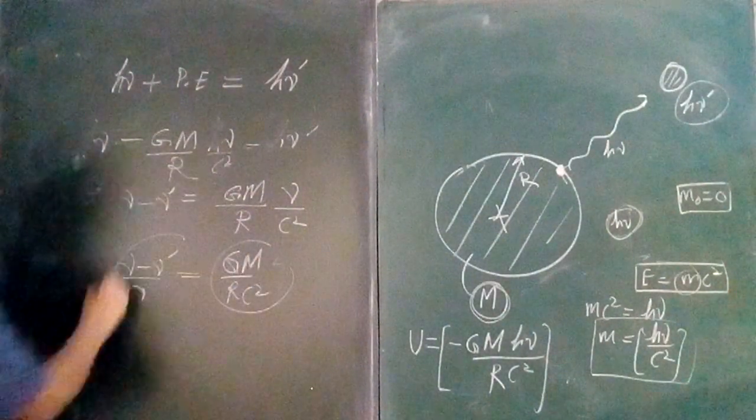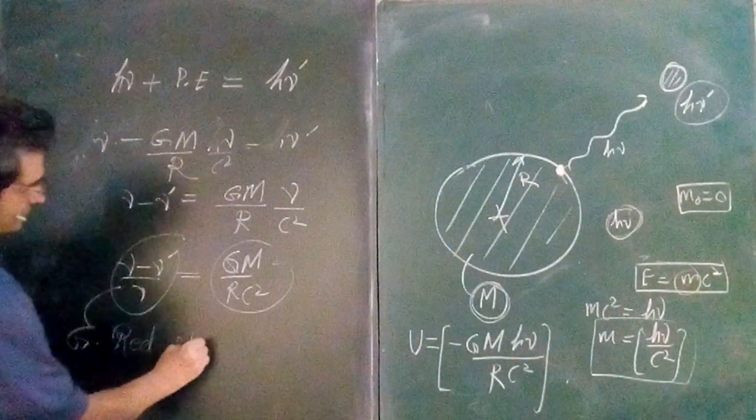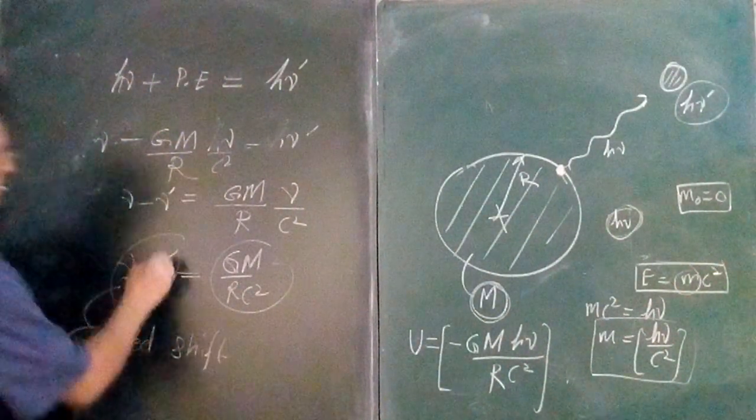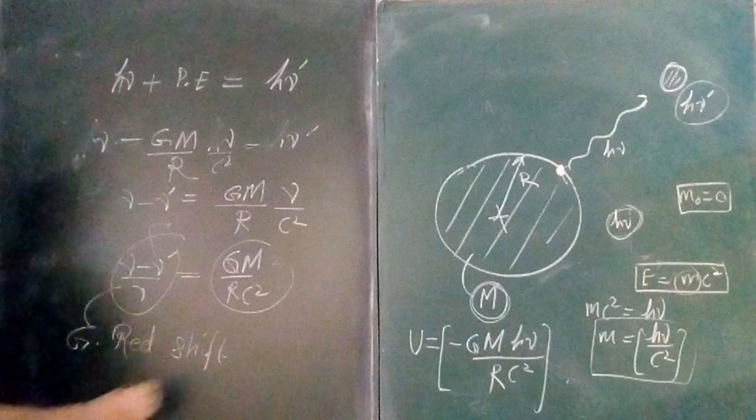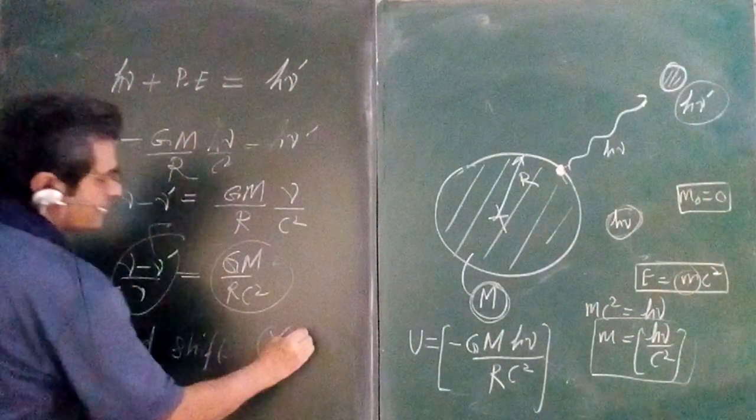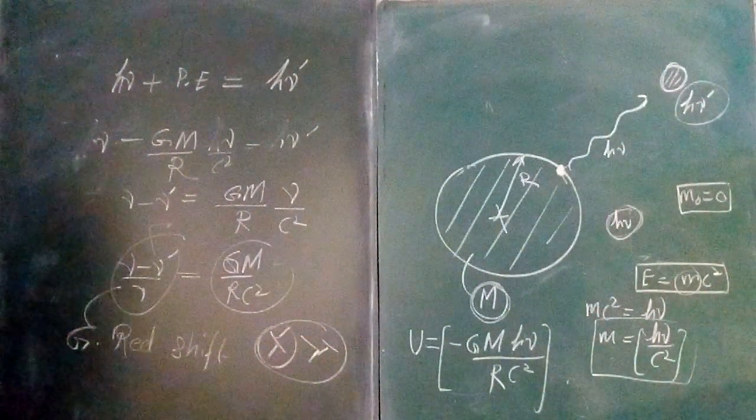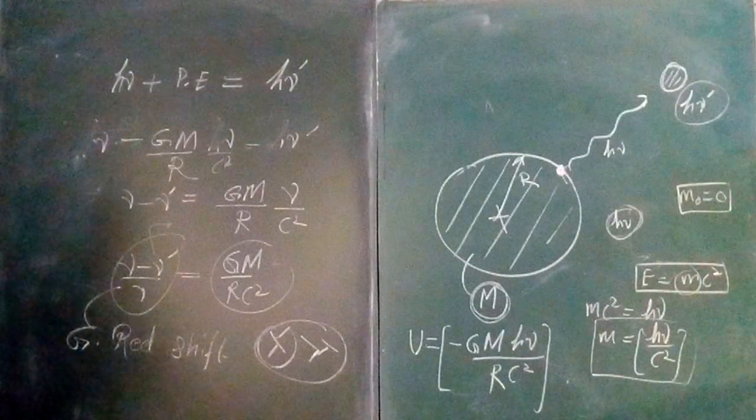This is called the gravitational red shift. The frequency is less, so the wavelength is high. Lambda dash is greater than lambda. That is why we call it red shift, that is gravitational red shift.